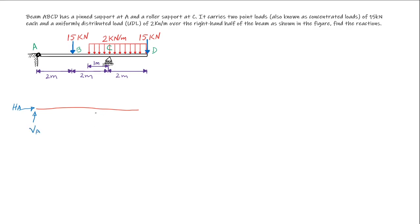Similarly at point C, because we have a roller support, therefore we will have only one reaction force which acts vertically and we call it VC. We put back the point loads as they are, 15 kN here and another 15 kN here, and also we put back the UDL as it is.